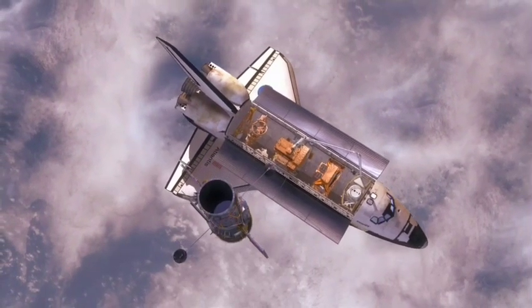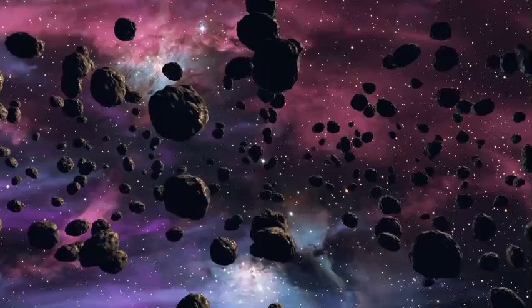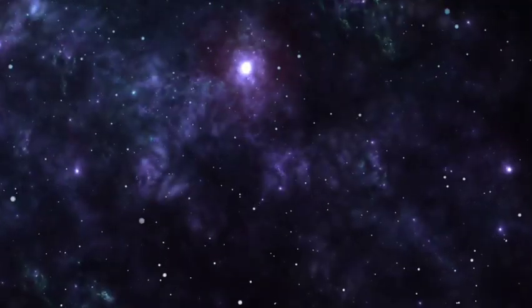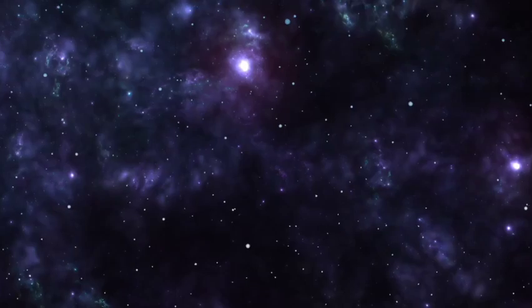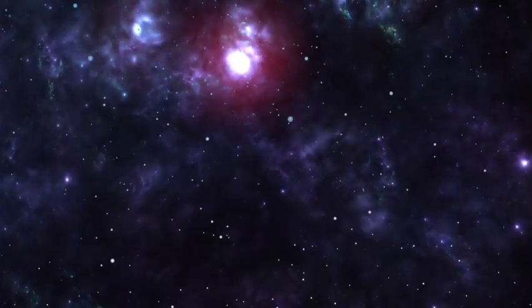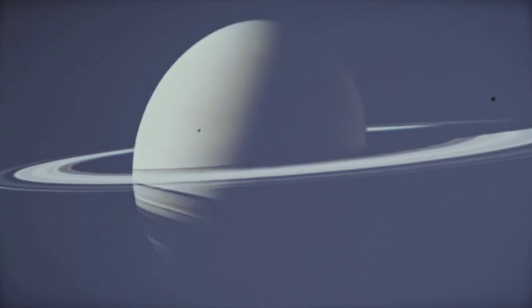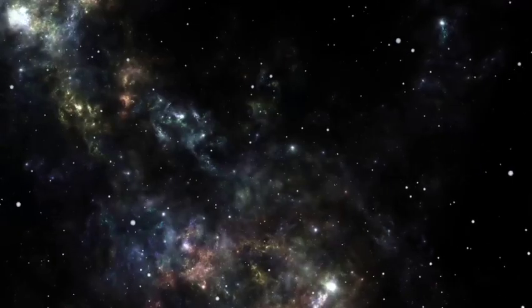The three-body problem in space involves determining how three objects like Pluto, Neptune and the Sun move and influence each other with their gravity. It's like trying to predict where they will go based on where they started and how they pull on each other. In Pluto's case, this problem shows how its orbit, Neptune's orbit and the Sun's gravity all work together in an intricate manner.